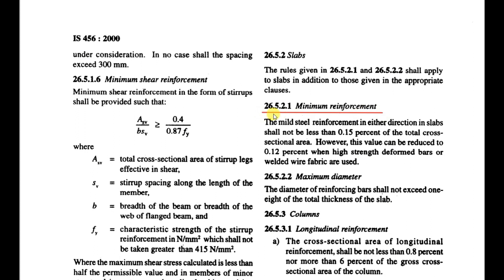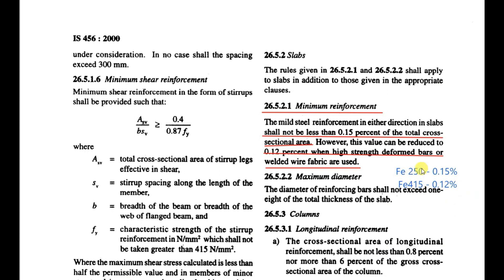Next, minimum reinforcement for slabs — clause 26.5.2.1. The mild steel reinforcement in either direction in a slab shall not be less than 0.15% of the total cross-sectional area. However, this value can be reduced to 0.12% when high-strength deformed bars or welded wire fabrics are used. So for Fe 250 (mild steel), use 0.15%; for Fe 415 or Fe 500 (HYSD bars), use 0.12%.